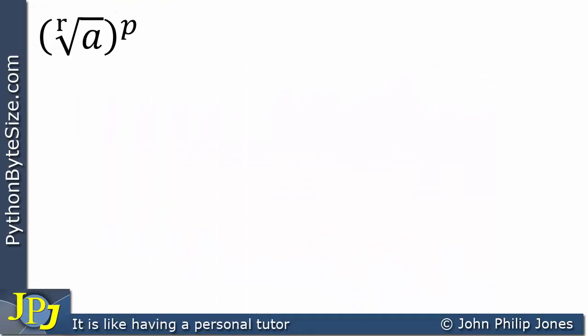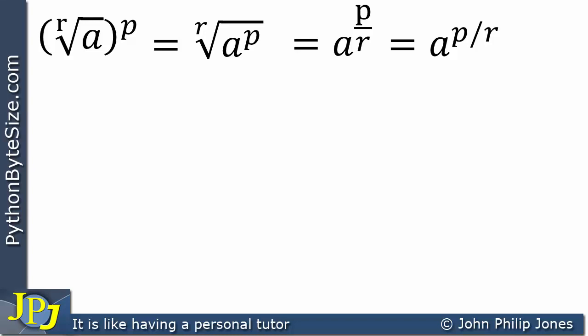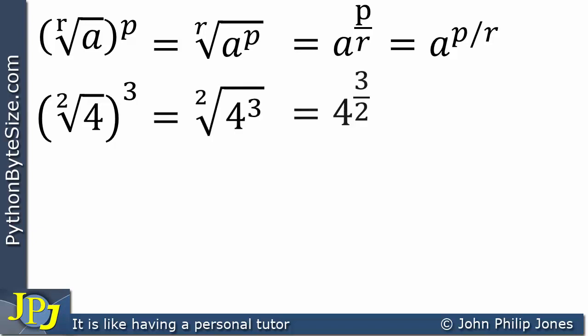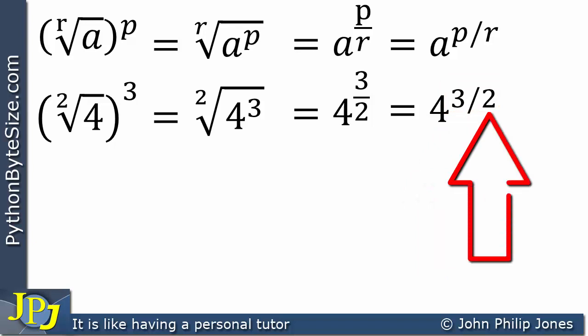So if we have this expression, it can be rewritten as a raised to the power p divided by r, which is often better expressed with p over r as the explicit fraction. In the concrete example shown here, we demonstrated that the expression is equal to 4 to the power 3 divided by 2, which may also be written as 4 raised to the fraction 3 over 2.